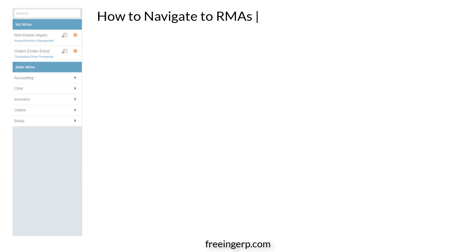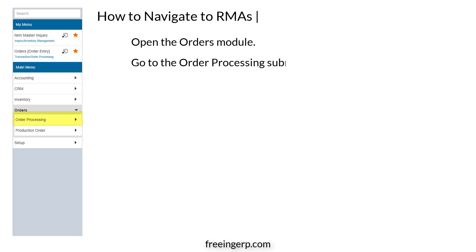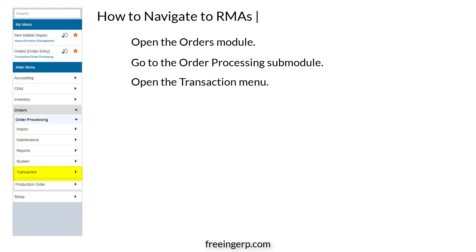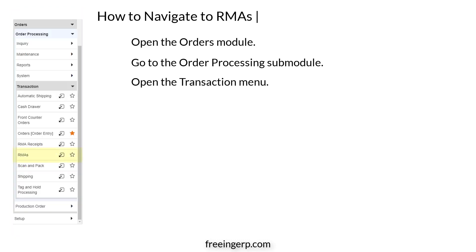Now we'll discuss how to navigate to RMAs in P21. First, open the Orders module. Next, go to the Order Processing sub-module. After that, open the Transaction menu. Finally, select RMAs.